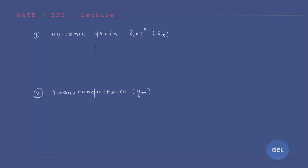Dynamic drain resistance: we had seen rds earlier — that was the channel resistance. But here, dynamic drain resistance rd equals delta VDS divided by delta ID. That is, the change in drain-to-source voltage divided by the change in drain current.